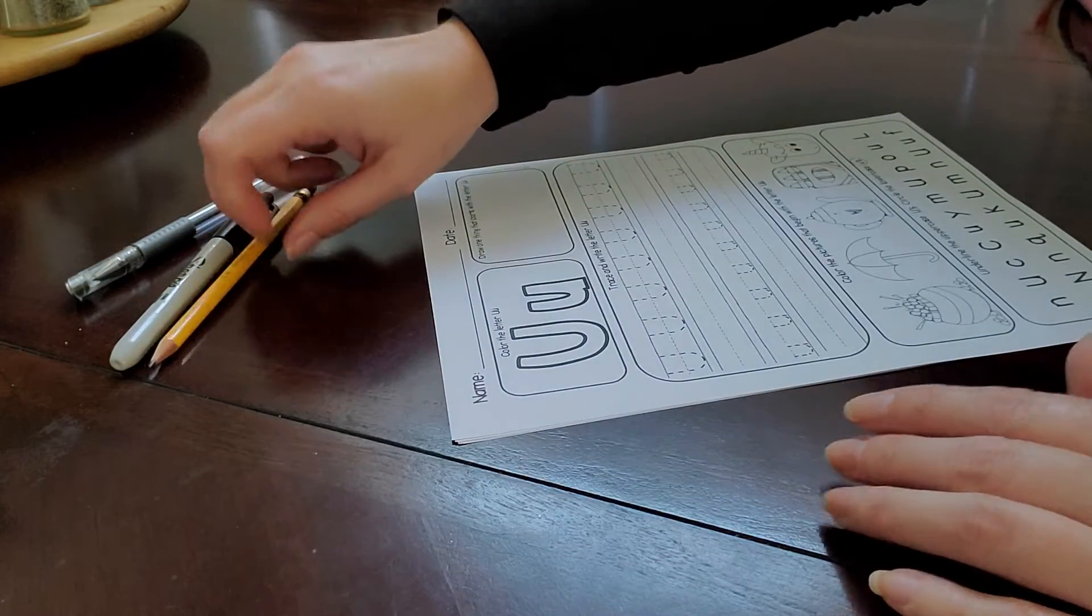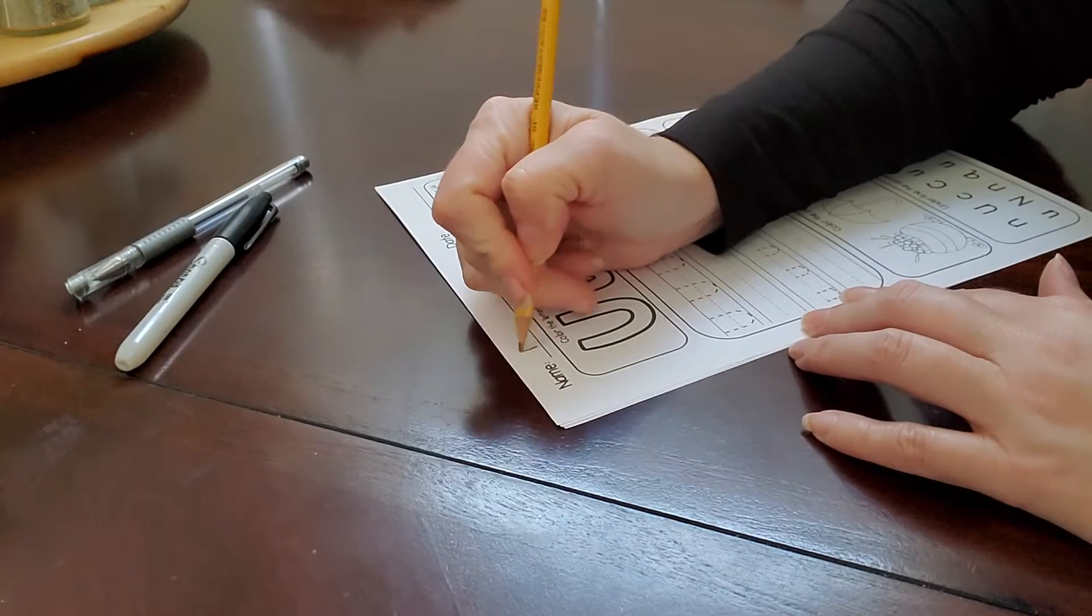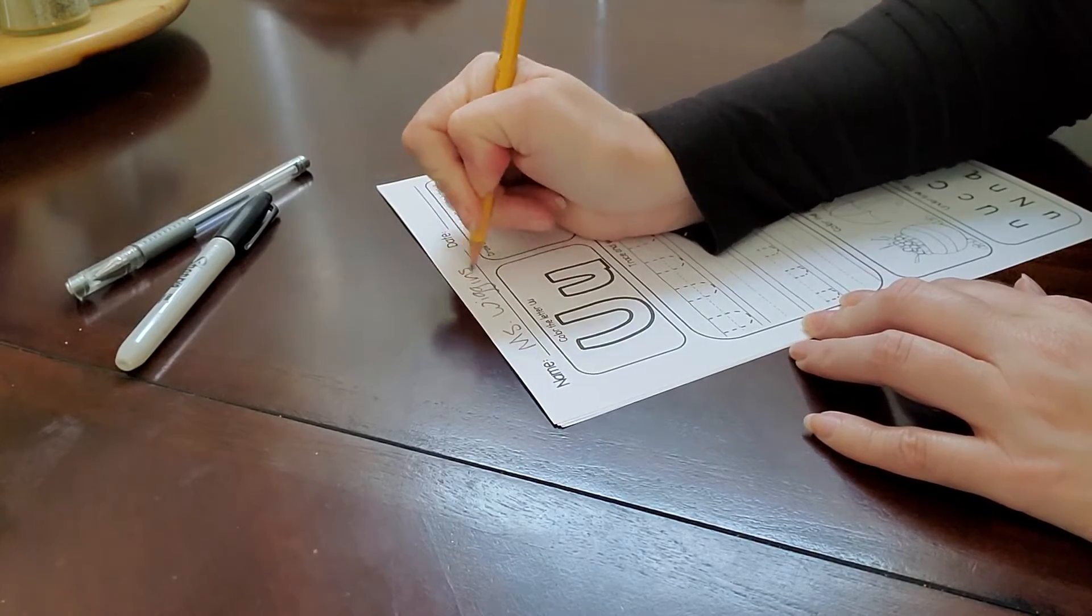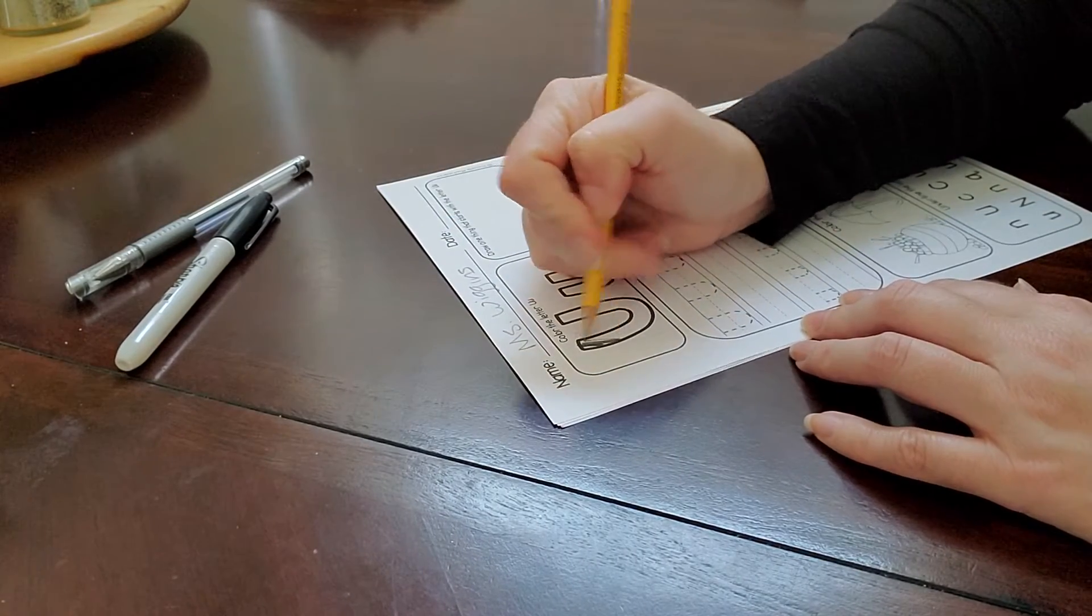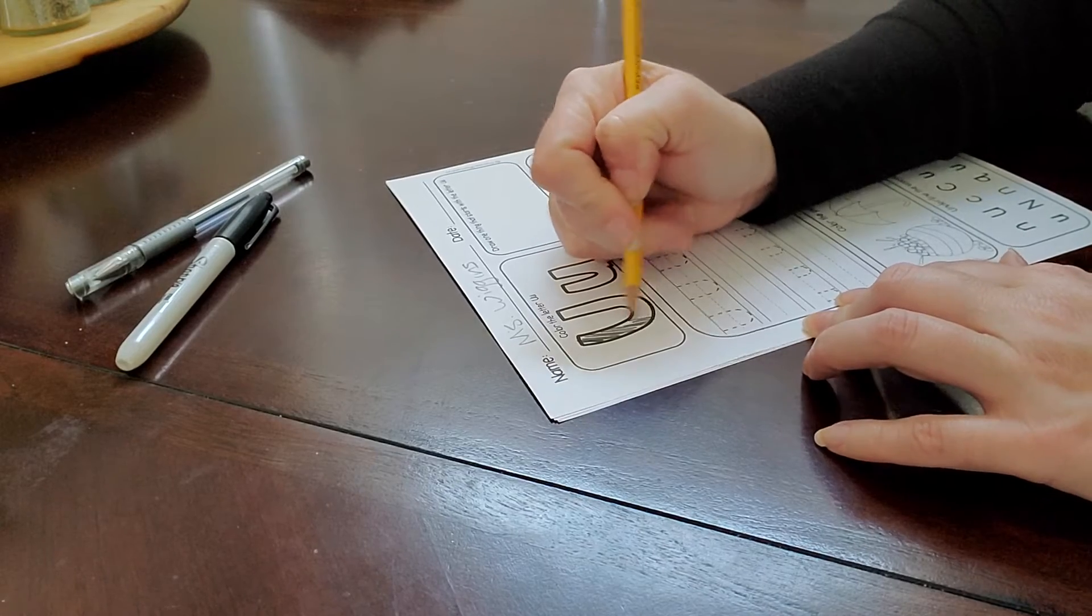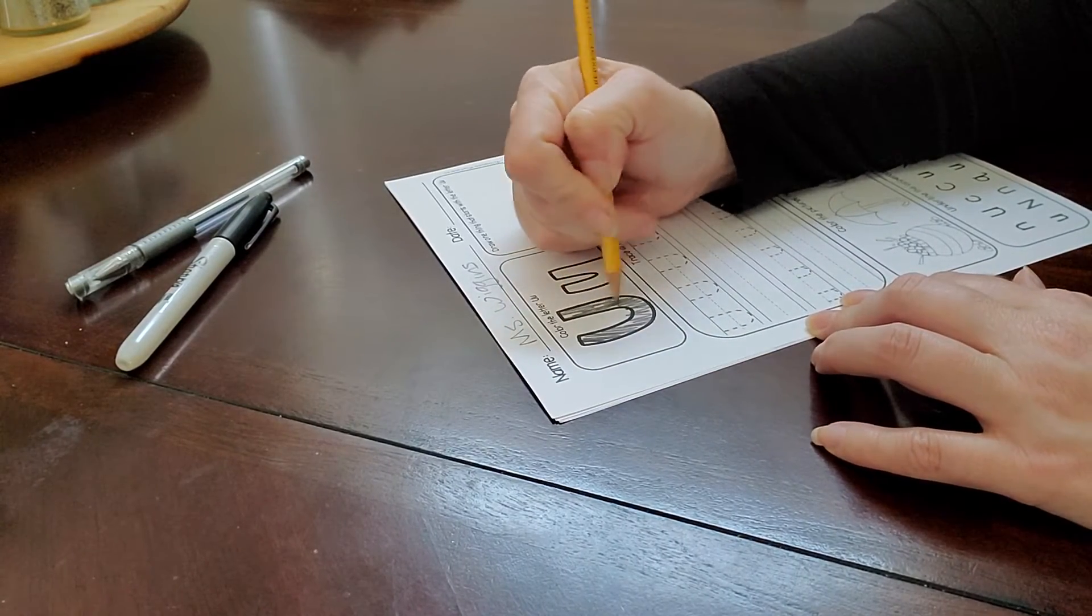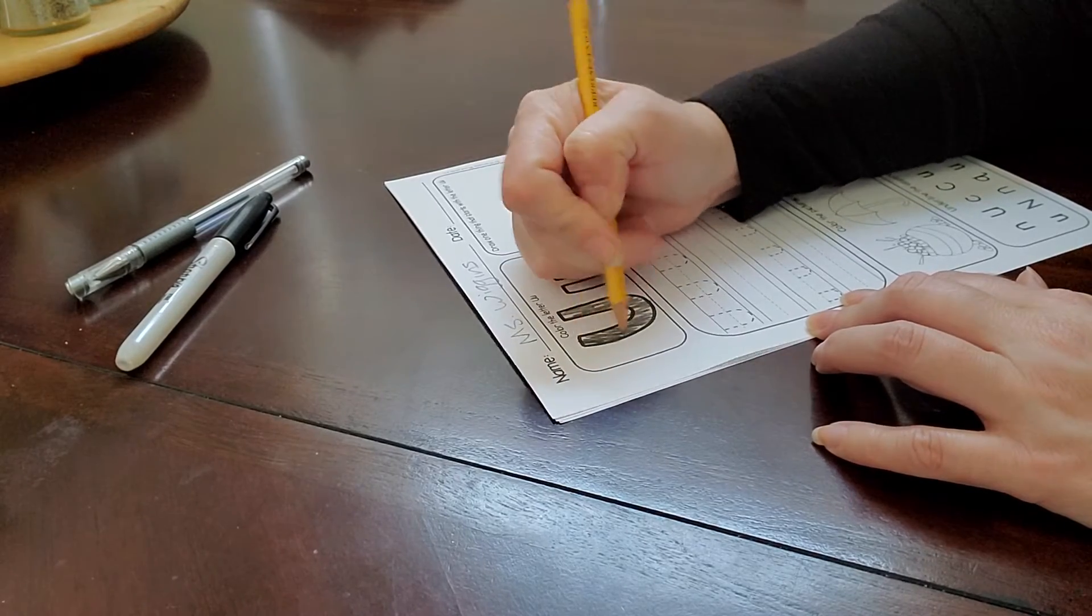First things first, write your name at the top. Then we can color in the U with our pencils because pencils tend to have the silver or metallic color. It's more shiny.